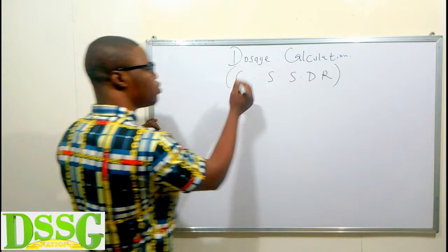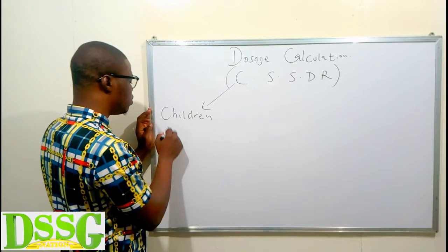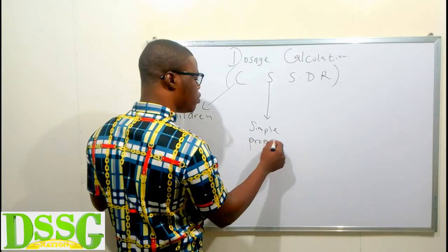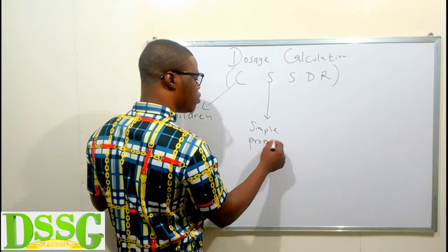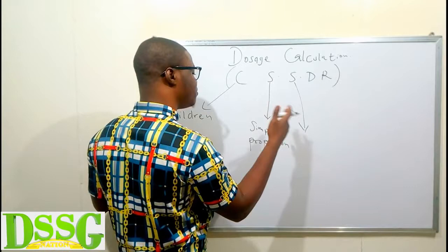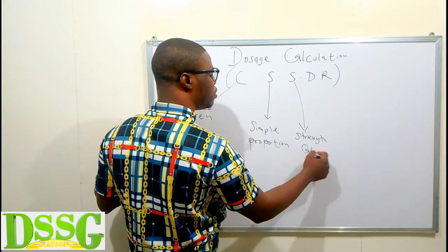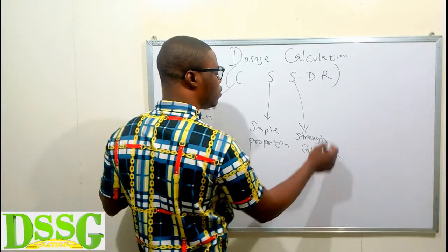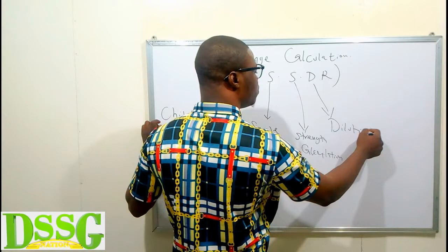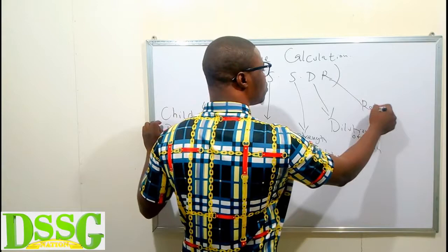What is C? It is the Children's dosage calculation. The first S is Simple Proportion. The next S is Strength Calculation. The D is Dilution of Lotion — that is, dilution. And R is Rate of Flow, rate of flow. So these are the five types of dosage calculation.